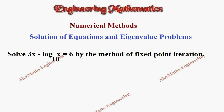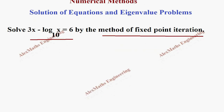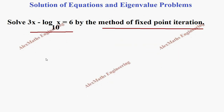Hi students, this is Alex. In this video, we are going to solve the equation 3x minus log x base 10 equal to 6 by the method of fixed point iteration. First, we have to take this function as f of x by bringing all the terms to one side. So we take f of x equal to 3x minus log x base 10 minus 6.